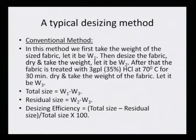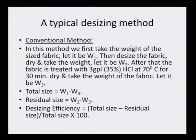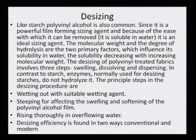A typical sizing method by conventional approach: first take the weight of the sized fabric (W1), then desize the fabric dry and take the weight (W2), after that treat the fabric with 3 GPL 35 percent HCl at 70 degrees for 30 minutes, dry, and take the weight (W3). Total size equals W1 minus W3, residual size equals W2 minus W3, and desizing efficiency equals (total size minus residual size) divided by total size, multiplied by 100. That is how calculations are done to determine whether desizing has been done efficiently.